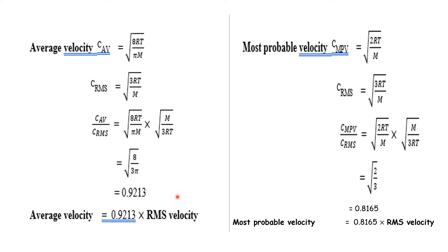Average velocity is the rate of change of position — total displacement divided by total time. The most probable velocity is the velocity possessed by the maximum fraction of gas molecules at a particular time. Root mean square velocity relates to temperature and kinetic energy.